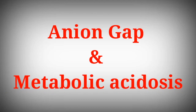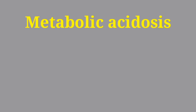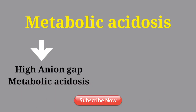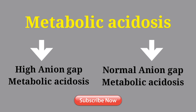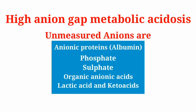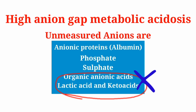The unmeasured organic anionic acids include lactic acid and keto acids such as acetoacetate and beta-hydroxybutyrate. We will now see the role of anion gap in the differential diagnosis of metabolic acidosis. Metabolic acidosis can be divided into two parts: high anion gap metabolic acidosis and normal anion gap metabolic acidosis.